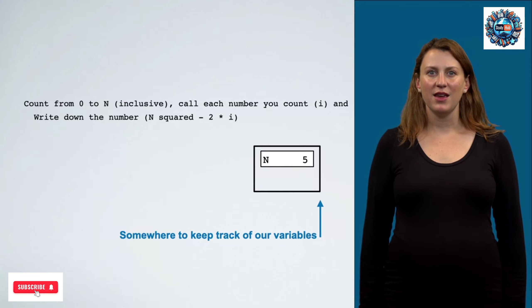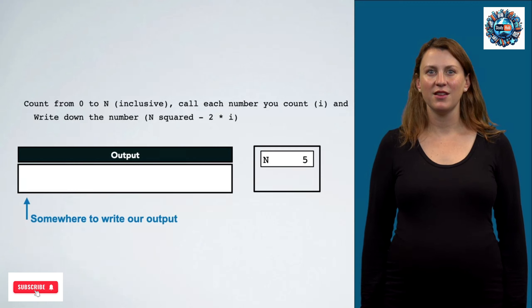As we begin, n has the value 5. The other thing we're going to keep track of is the output of our program. Here is a box labeled output, and every time we write something down, we're going to write it into this output box.